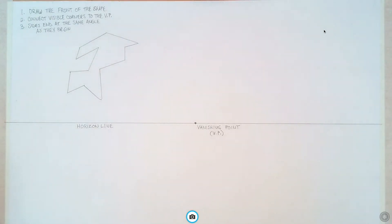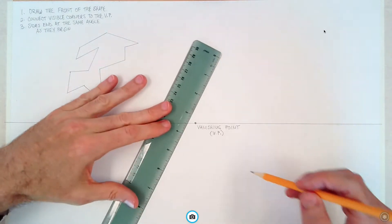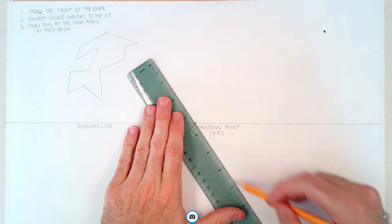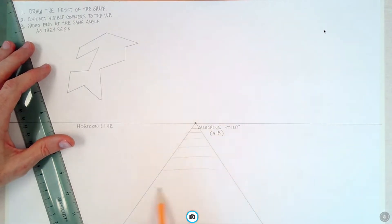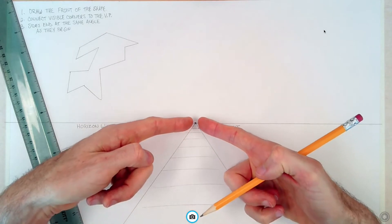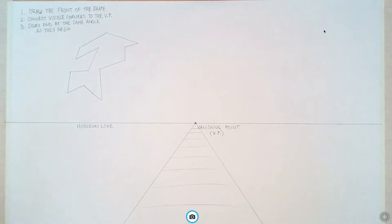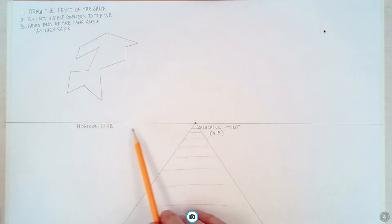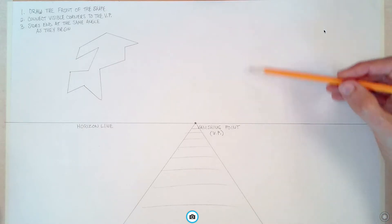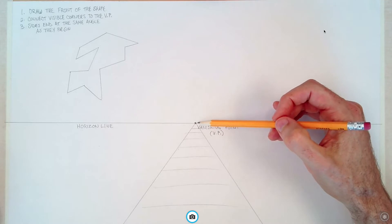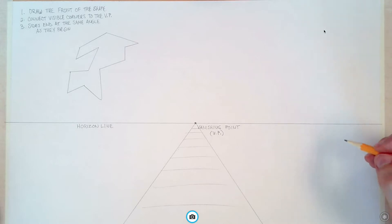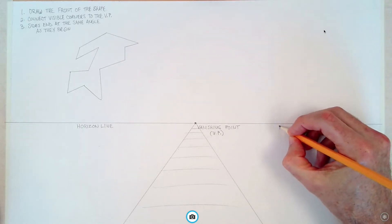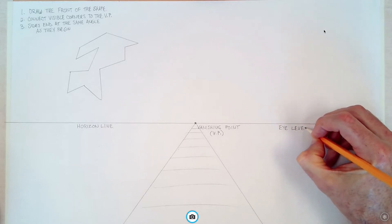What we're going to do today is start with one-point perspective. Perspective is basically the idea that as things get further away from you they get smaller. The most common example is if you were standing on railroad tracks — the tracks would get smaller and smaller as they moved away until they vanished. This is called the vanishing point. We also have a horizon line, which is where the ground meets the sky. The vanishing point is going to be on your horizon line just about all the time. This is also called the eye level because it is the level your eye is at.